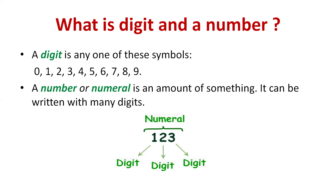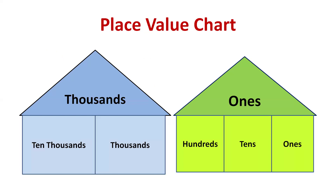Now we will talk about the place value chart. A place value chart is used to read and write numbers. Imagine there are two houses: the ones house and the thousands house. In the ones house, only 3 members can live, and their names are ones, tens, and hundreds. In the thousands house, only two members can live — thousands and ten thousands. In math, we call these houses as periods.